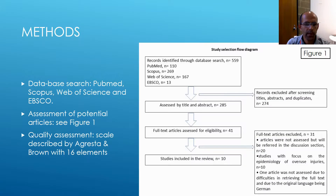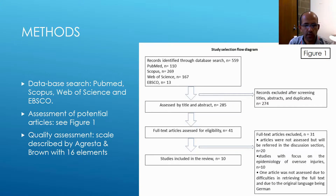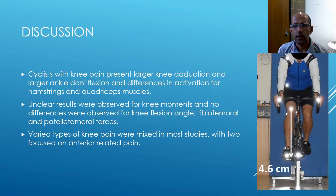We did a database search on PubMed, Web of Science, and SPORTDiscus. We assessed potential articles as shown in Figure 1, performing title and abstract screening, full-text assessment, and a quality assessment using a scale that allowed us to rank articles based on quality. In terms of discussion, cyclists with knee pain showed notable findings.